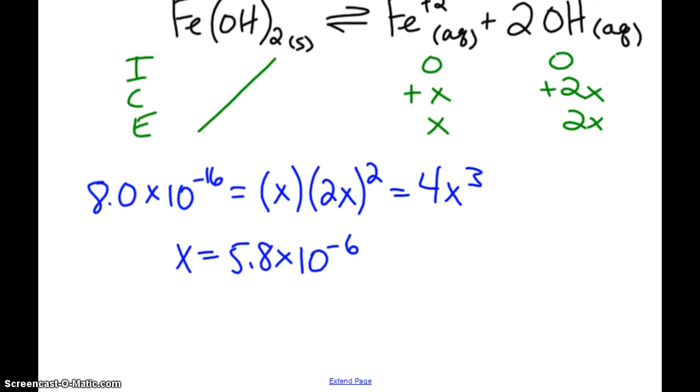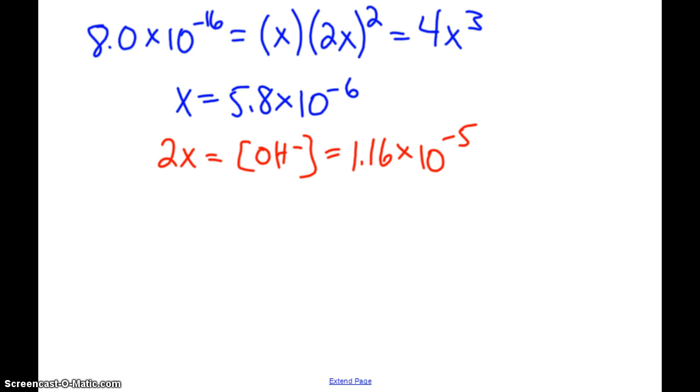Alright, so in order to find my pH, I need to find my hydroxide concentration. Hydroxide concentration is 2X. So 2X equals 1.16 times 10 to the negative 5. And so now, since that's my hydroxide concentration, my pOH is equal to 4.9. My pH is equal to 9.1.